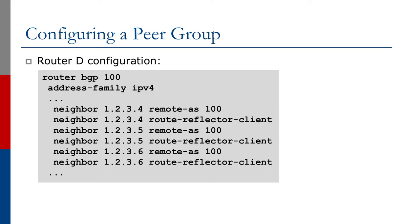Configuration is very simple. Every vendor has their own style, but in Cisco IOS it requires just one extra line in the neighbor configuration, indicating that the neighbor is a route reflector client.